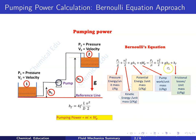Here, p1/ρ is pressure energy per unit mass (J/kg), v1²/2 is kinetic energy per unit mass (J/kg), g·h1 is potential energy per unit mass (J/kg), η·wp is the pump work per unit mass (J/kg), and hf represents frictional losses per unit mass (J/kg).